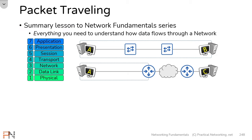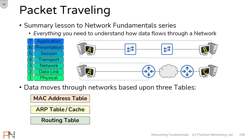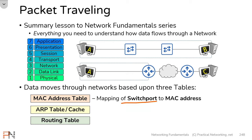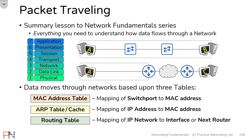At its core, understanding how data flows through a network comes down to understanding three specific tables: a MAC address table, an ARP table (also referred to as an ARP cache), and a routing table. Each of these tables is a mapping of something to something else. A MAC address table is a mapping of a switch port to a MAC address. An ARP table is a mapping of an IP address to a MAC address. And a routing table is a mapping of an IP network to an interface, or an IP network to the IP address of the next router in the path — also known as the next hop IP address. These three tables are crucial to moving data through a network.